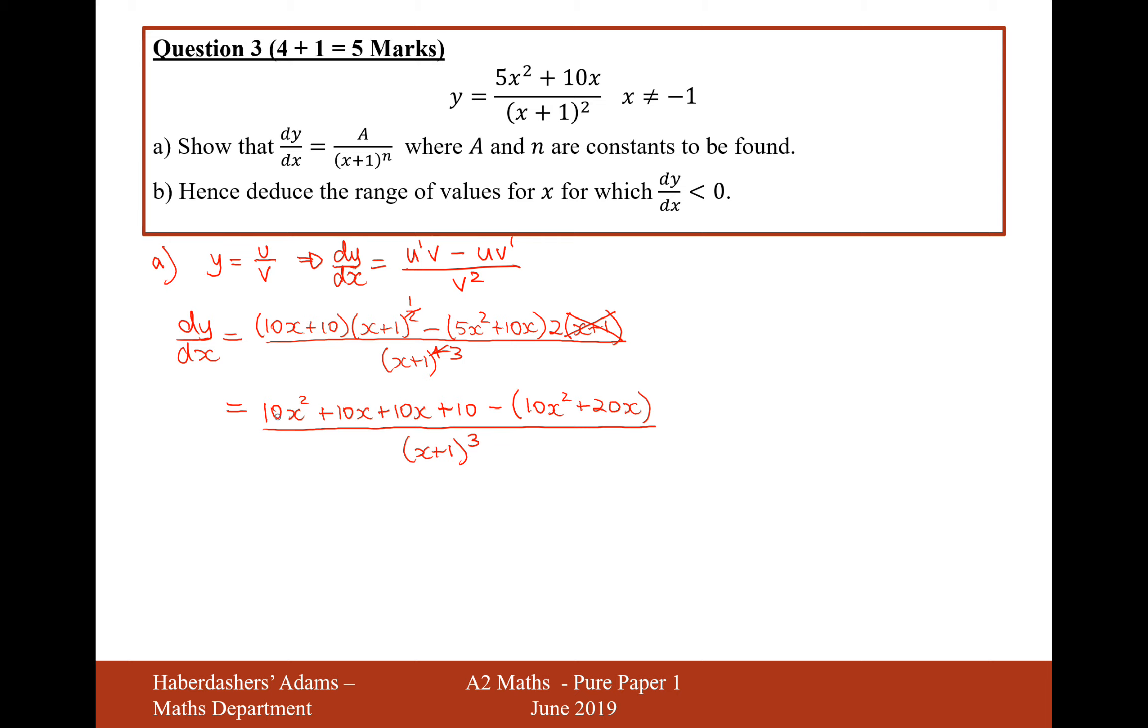Let's simplify the numerator. So 10x squared will cancel out from the top and bottom. And then we'll have 20x's cancel out from the top. So all I'm left with then is 10 over x plus 1 cubed.